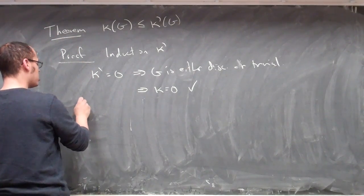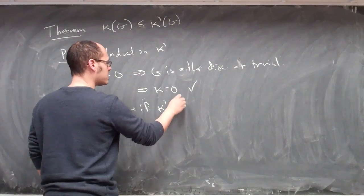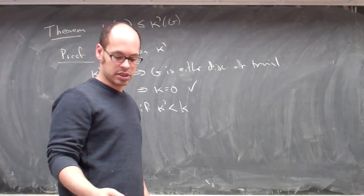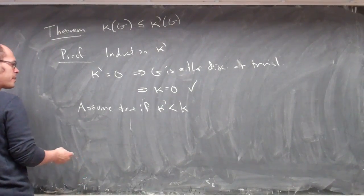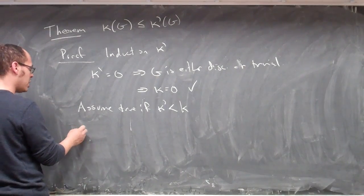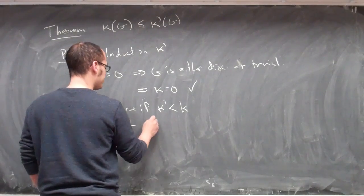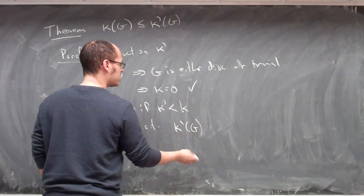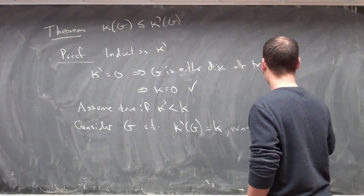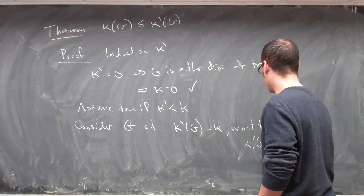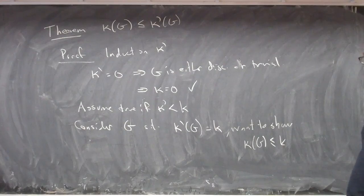For the general case, we're going to assume that it's true if κ' is less than some given k, where k is some non-negative number. We want to consider a graph G such that the edge connectivity is exactly k, and we want to show that the vertex connectivity of the graph is less than or equal to k.